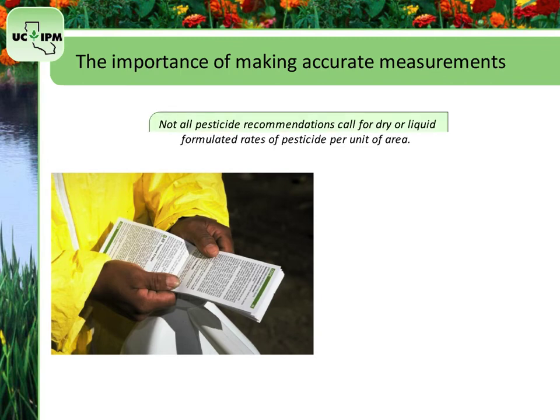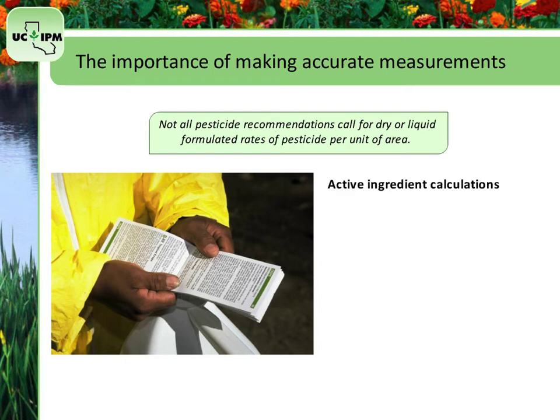Not all pesticide recommendations call for dry or liquid formulated rates of pesticide per unit of area. Some require an application rate in pounds of active ingredient (AI), as a percentage solution, diluted to parts per million, or an amount per gallon. Let's first look at active ingredient calculations.